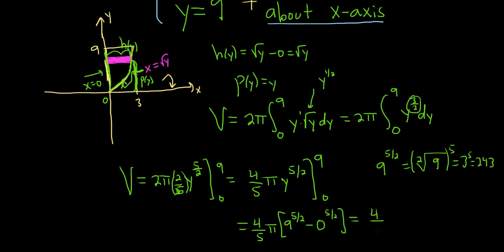So this is 4 fifths pi times 243. And if you put this into your calculator, you will get 972. So we get 972 pi over 5. And that will be the volume in this problem.